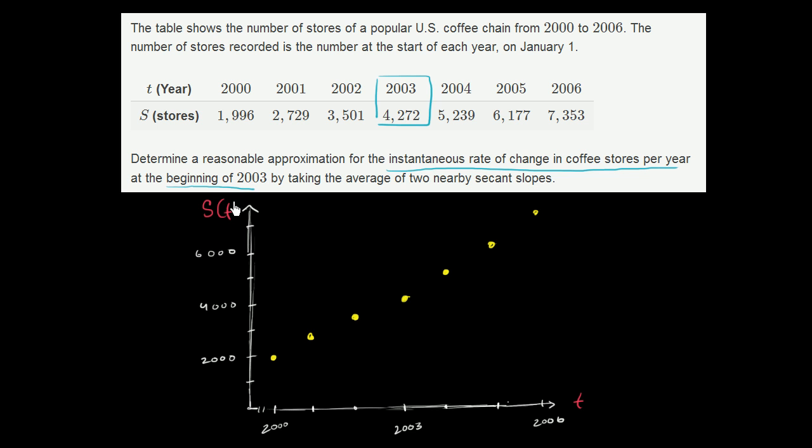And we could even say that it is a function of time. So you see in the year 2000, there was 1,996 stores. 2003, 4,272. 2003, let me do that in that blue color. 2003, 4,272 stores.